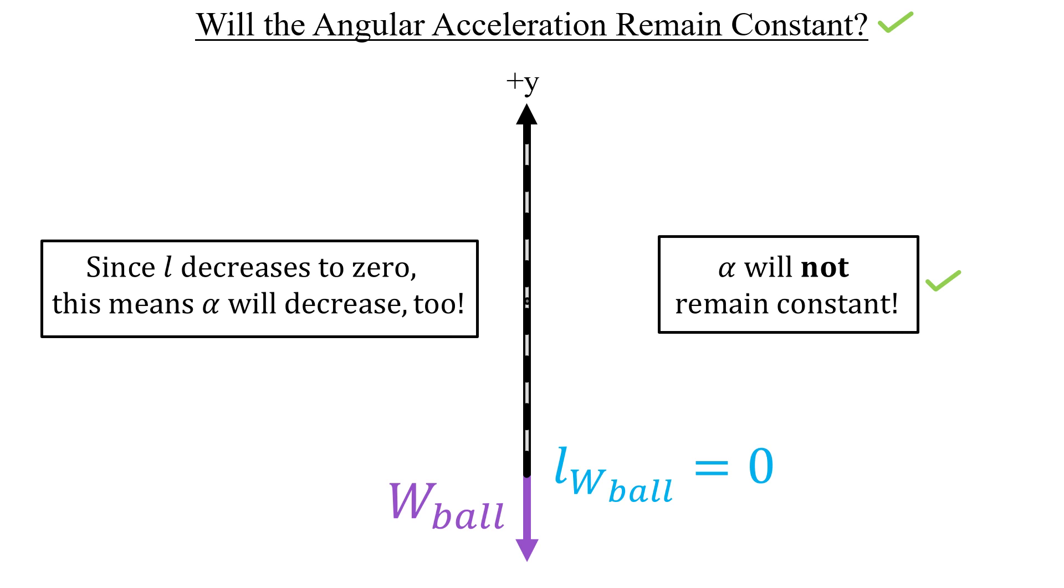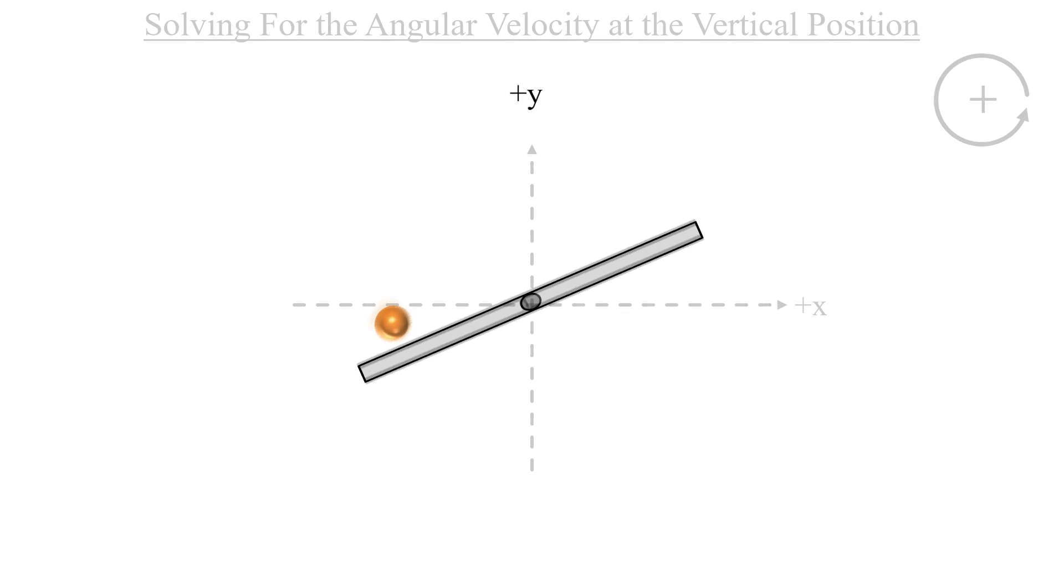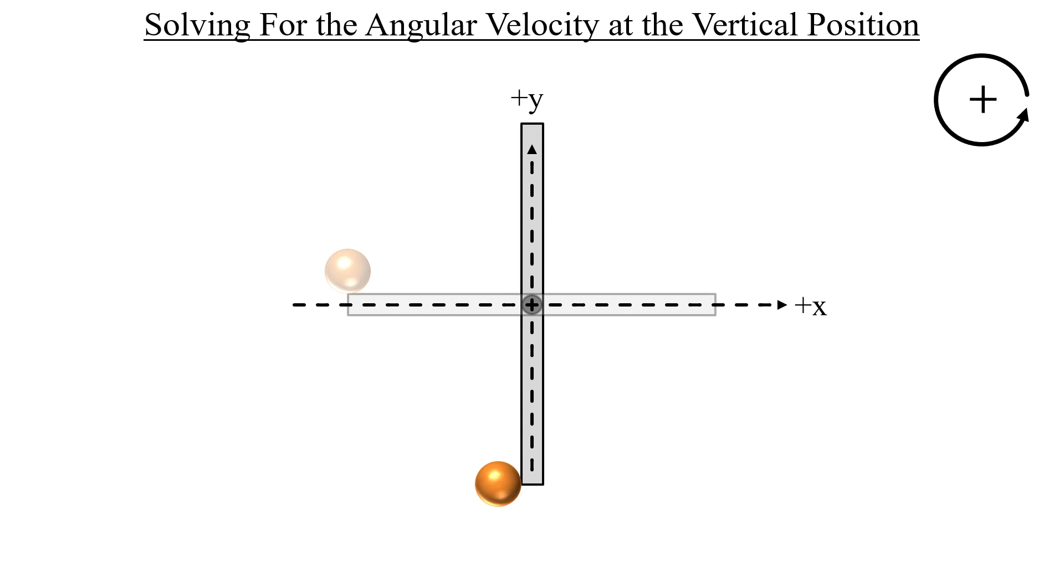For the last part, we need to use energy conservation. And I think it'll help if I restore the picture back to normal so everything is easier to see. Let's say that right before the motion starts, the bar and the ball are in the initial position. And then once they swing through the vertical, that will be our final position.